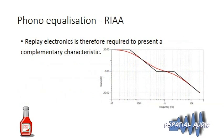That's the complementary characteristic that must be implemented when the record is replayed — boosting the bass back up and cutting the treble. There's a very famous curve called RIAA which was the equalization largely adopted from about the 1960s onwards. We'll come to some complications regarding that later.